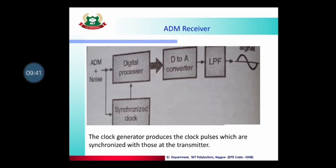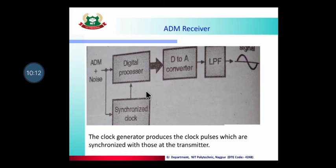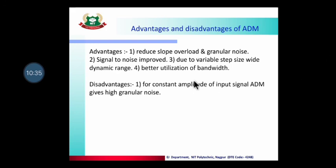The ADM receiver diagram is essentially the reverse process of the ADM transmitter. The transmitter output, possibly with added noise, is fed to the digital processor. The digital processor output goes to a D-to-A converter, and the analog value is passed through a low-pass filter to recover the original signal. It is very important that the receiver and transmitter are synchronized — meaning the receiver must operate at the same speed as the transmitter for the pulses to properly reconstruct the signal.